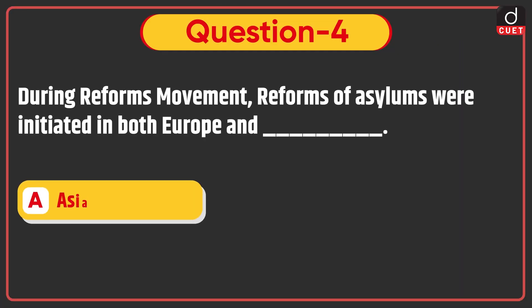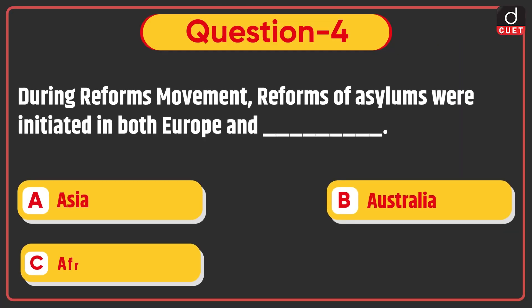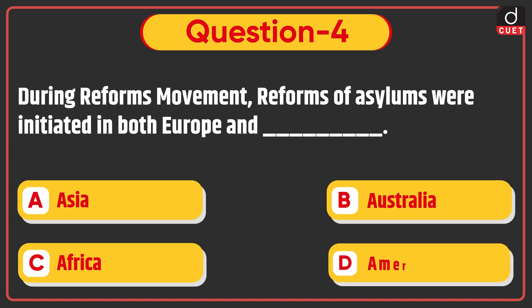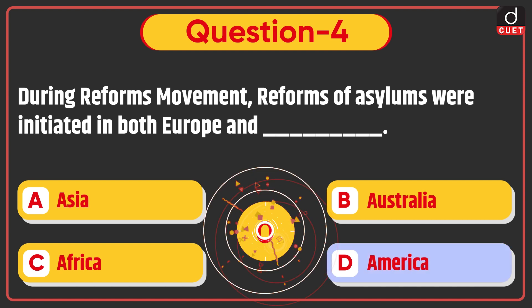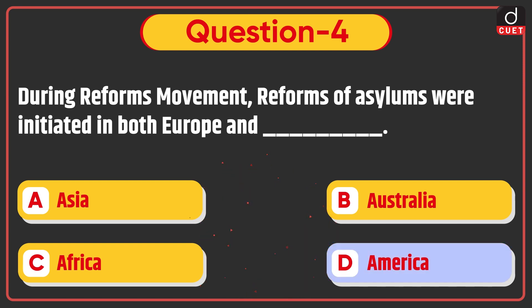Next question: during the reforms movement, reforms of asylums were initiated in both Europe and — Asia, Australia, Africa, or America? The correct answer is option D: America.